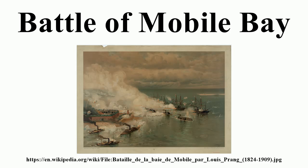Mobile and Mobile Bay were within the Department of Alabama, Mississippi and East Louisiana, led by Major General Dabney H. Maury. Although Mobile was the site of the Department headquarters, Maury did not exercise immediate command of the forts at the entrance to the bay, and he was not present during the battle and ensuing siege. Local command was entrusted to Brigadier General Richard L. Page. The primary contribution of the Confederate Army to the defense of Mobile Bay was the three forts.